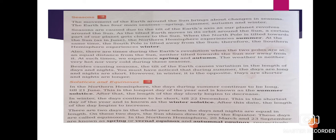When the north pole is tilted towards the sun, the northern hemisphere experiences summer. So when the northern part is tilted near to the sun, the north pole experiences summer. At the same time, the south pole experiences winter.